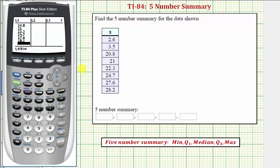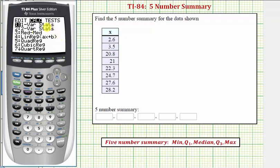Now that we have the data in L1, we want to run the one-variable stat tool. Press STAT, right arrow once to CALC, and notice how the first option is 1-Var Stats, which is what we want. We can press 1, or because one is already highlighted, we can press ENTER.